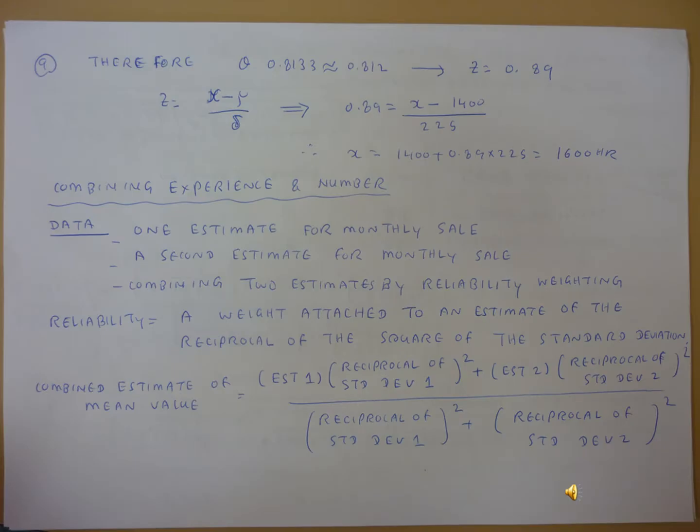The next one is combining the experience and the number. Combining means you have to determine your past experience and the numbers. You have to combine it. This means that you are doing something.